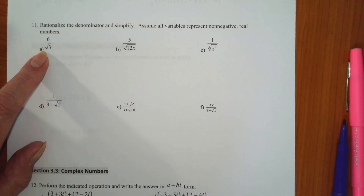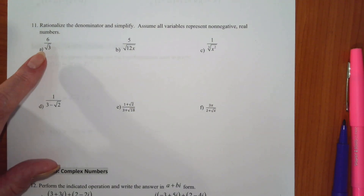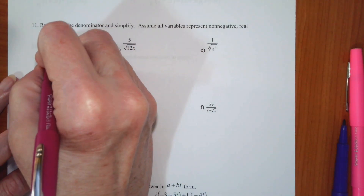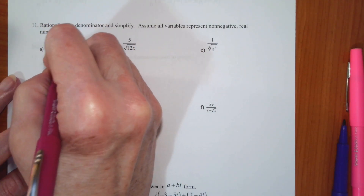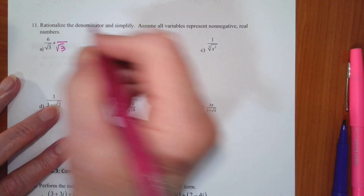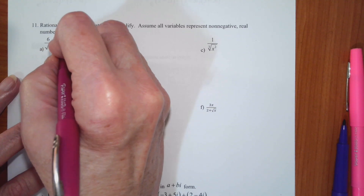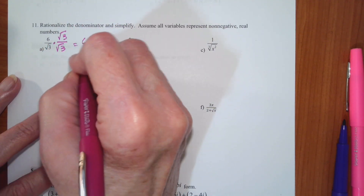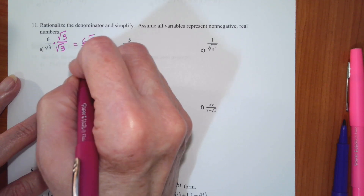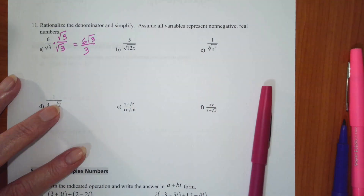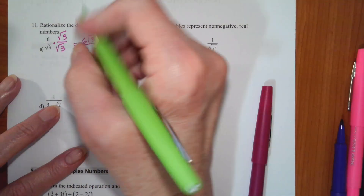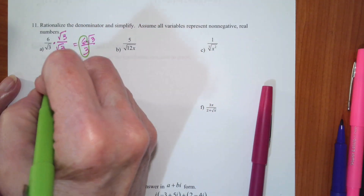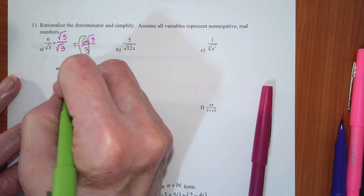If I multiply the denominator by root three, that'll turn that into three. So I have to do the same in the numerator. So this becomes six root three over three. And now I can simplify the six over three, and this becomes two root three.